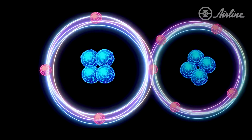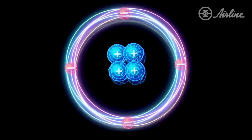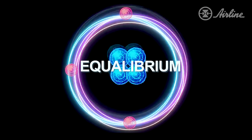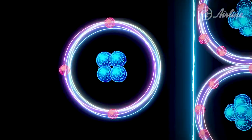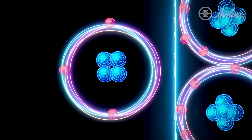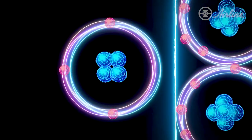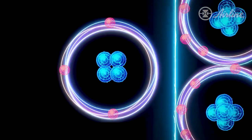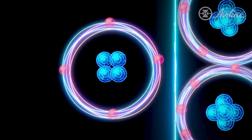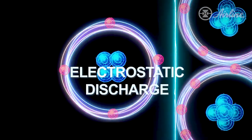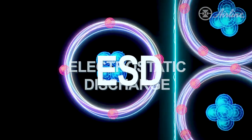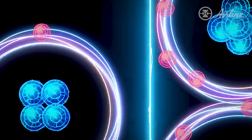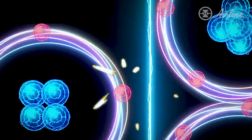An ion will eventually find its way to resolve itself and achieve a neutral charge called equilibrium. When an ion comes into contact with another material, the extra electrons can quickly move from the negatively charged ion or will jump onto a positively charged ion. This movement of electrons is called electrostatic discharge, or ESD — this is what we recognize as the zap or spark we experience with static electricity.